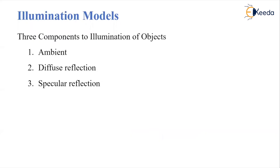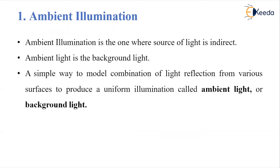Illumination models basically depend on three main components: ambient illumination, diffuse reflection, and specular reflection. Let's see them one by one.